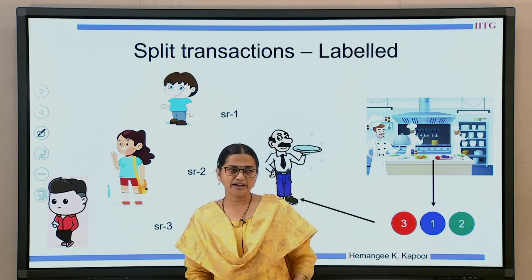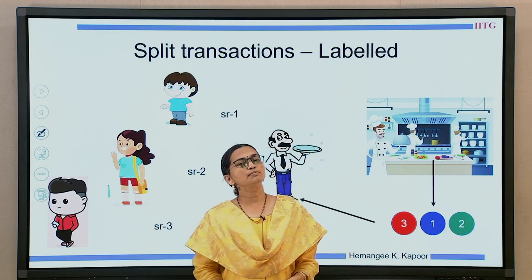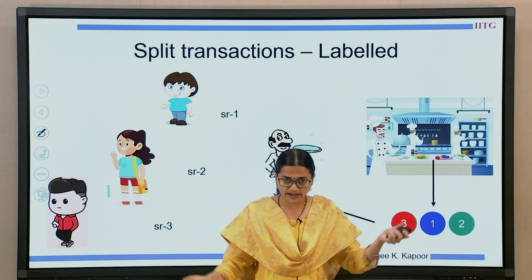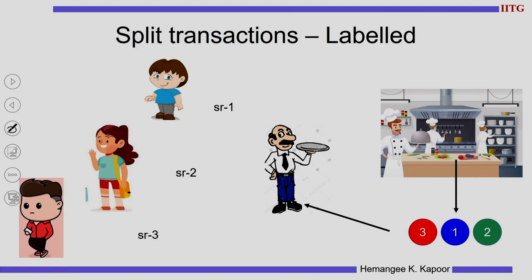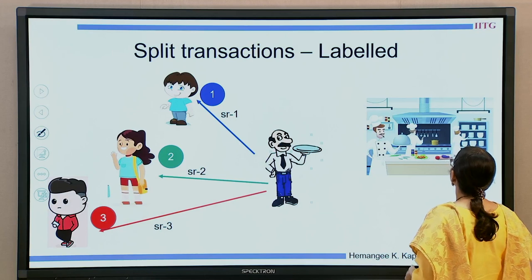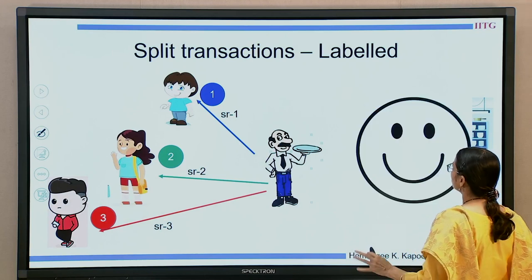We are now going to give labels to these transactions. When the orders get ready at the kitchen, they come with the label of the customer ID. This helps the service person to handle the case nicely — the dishes come with labels of the customers or table numbers, and the service person gives the red dish to customer 3, blue to the correct one. Now everybody has got their respective dishes and everyone is happy.